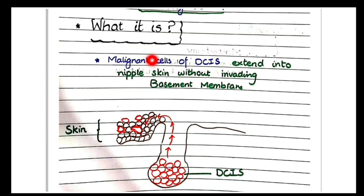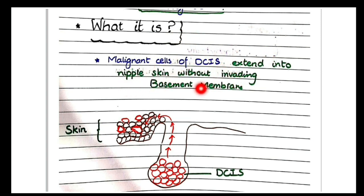Paget's disease of nipple is a condition in which the malignant cells of ductal carcinoma in situ extend into the nipple skin without invading the basement membrane.